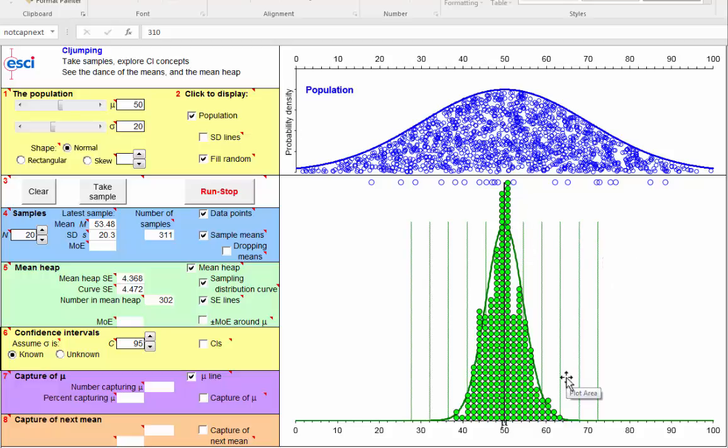Now my question is, let's think about estimation error. Each of these means, and remember as a researcher we only have a single mean usually, each of these means we can use as an estimate of mu. Now how close are they to mu? Well more particularly, what's the interval here that includes 95% of these sample means?